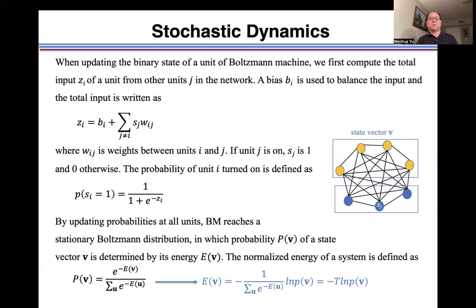The probability of unit i turned on is defined as a sigmoid function. By updating probability at all units, Boltzmann machine reaches stationary Boltzmann distribution, in which probability p of a state vector v is determined by its energy.